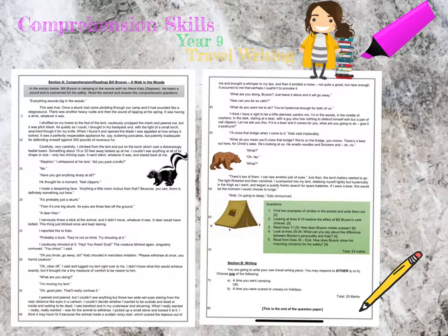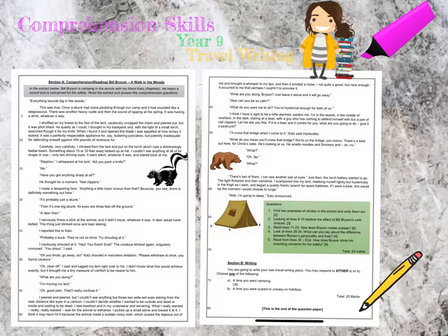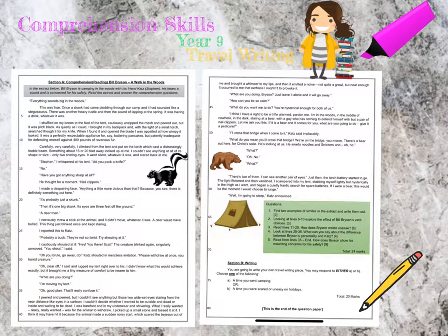Because you've got two examples and it's worth two marks, all you have to do is write out the quotation for each of those similes. For question two — looking at lines six to ten, explore the effect of Bill Bryson's verb choices — you know it wants you to consider the effect. For question three — read lines 11 to 25, how does Bryson create unease — it's worth six marks. The word 'how' tells us we need to use point, evidence, and explain, and so does how many marks it's worth. So you need at least three really good chains.